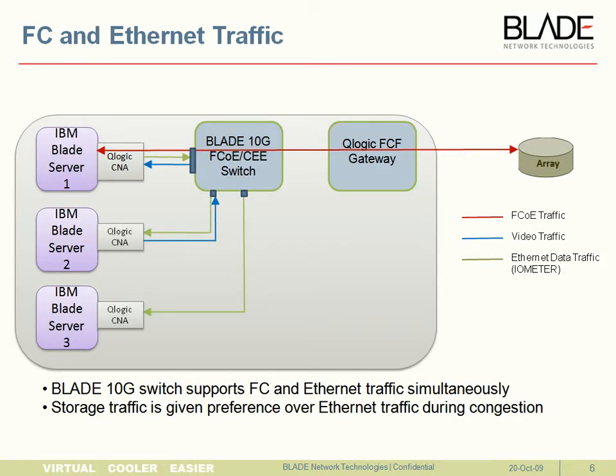In the next setup, we have introduced two more blades to load more traffic onto the FCoE blade server to show the converged nature of the FCoE-CE switch. We will be running three different kinds of streams: first, the FCoE storage traffic going to the disk; second, video traffic being streamed from IBM Blade Server 2 to IBM Blade Server 1; and two instances of IO meter doing regular Ethernet traffic to IBM Blade Server 1. When the switch sees congestion, it will use the Priority Flow Control protocol to manage congestion and ensure no storage traffic is lost.